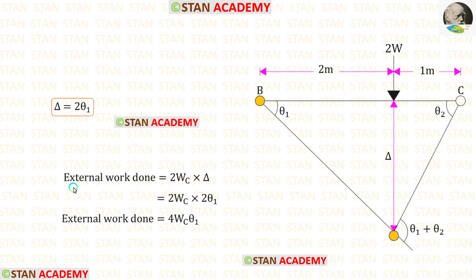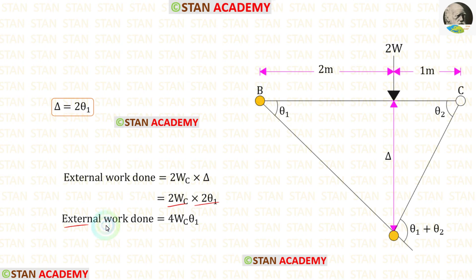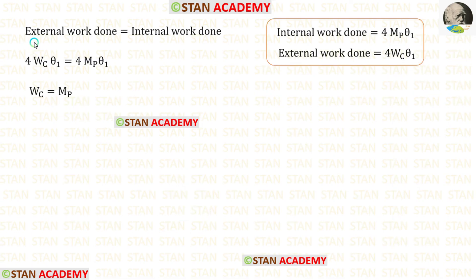Now let us find the external work done. We multiply this load 2W with the virtual displacement delta. Substituting delta as 2 theta1 and multiplying, we get the external work done equal to 4wc theta1. Equating external and internal work done and eliminating 4 and theta1, we get wc equal to mb.